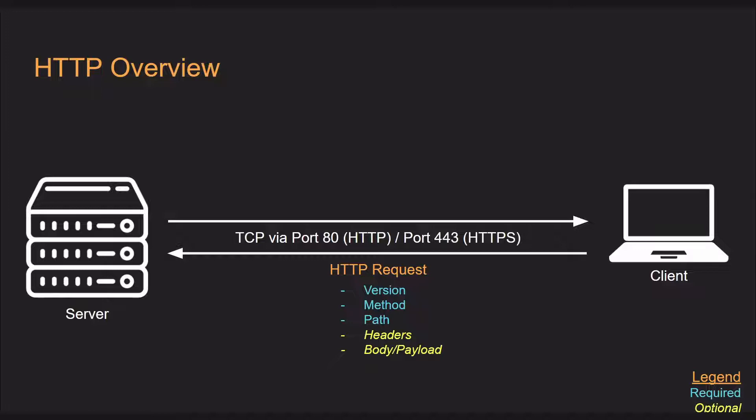HTTP requests require three things: first, an HTTP version; second, the HTTP method you're going to use; and lastly, where to send the HTTP request. Optionally, you can also have headers attached and potentially a body or payload, but I'll explain that more in just a little bit.